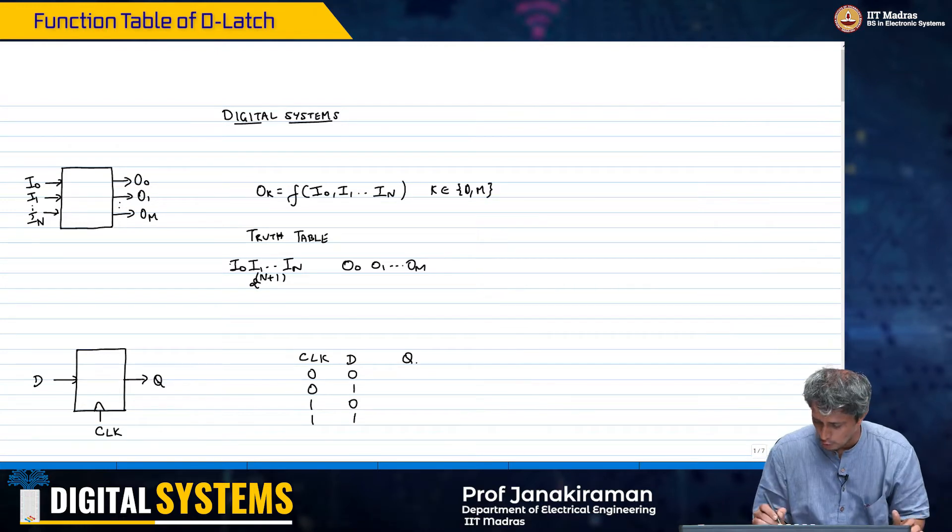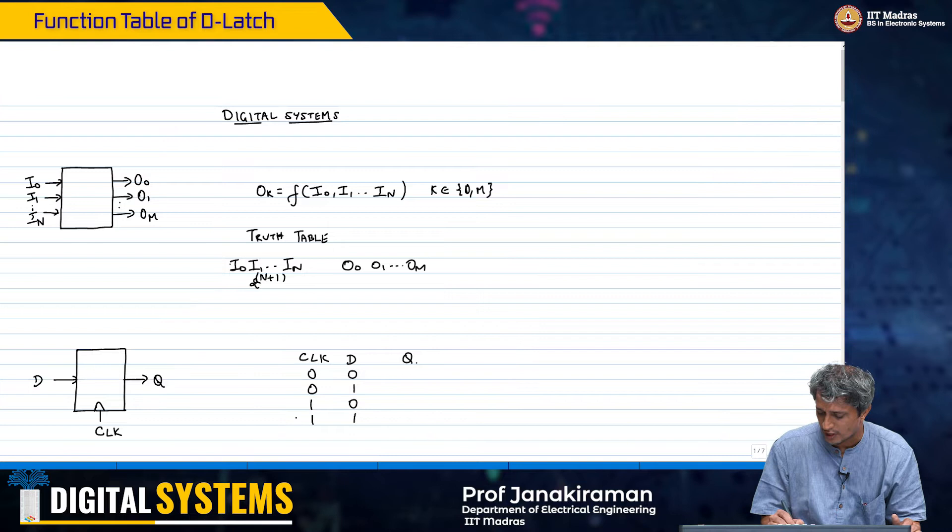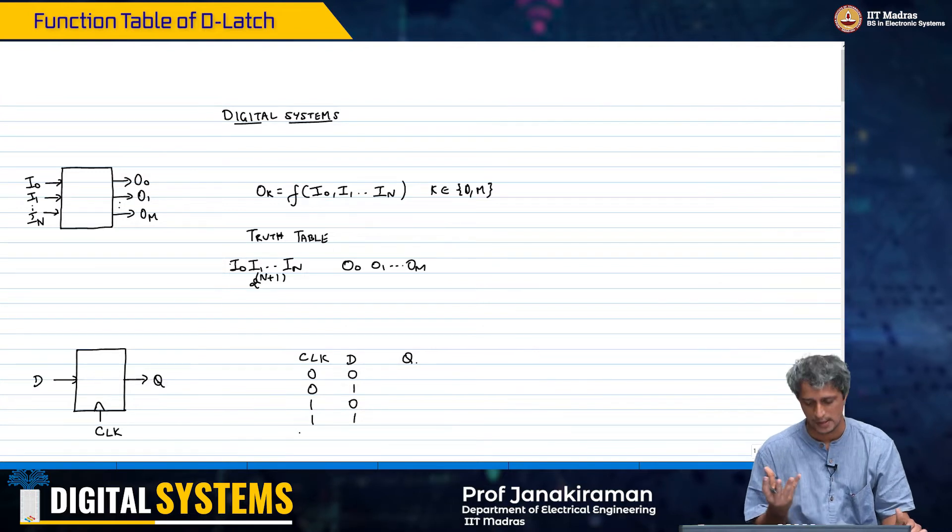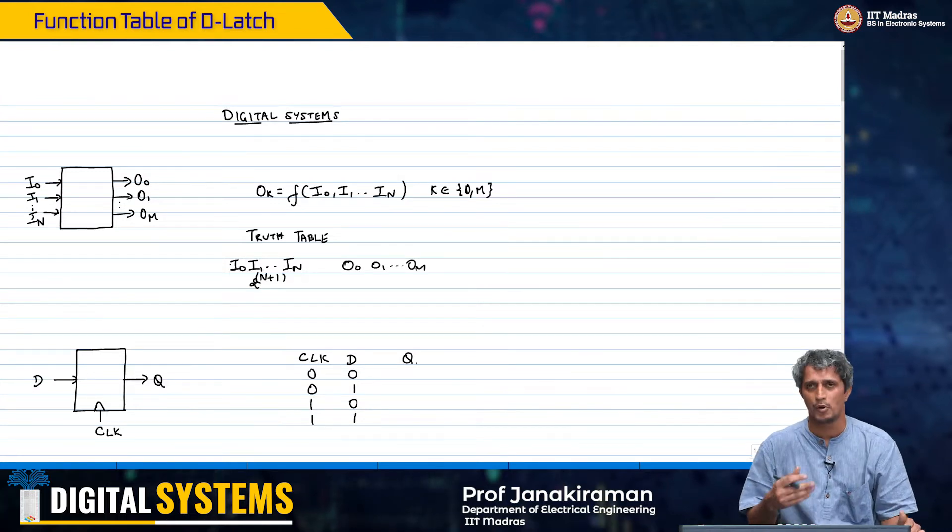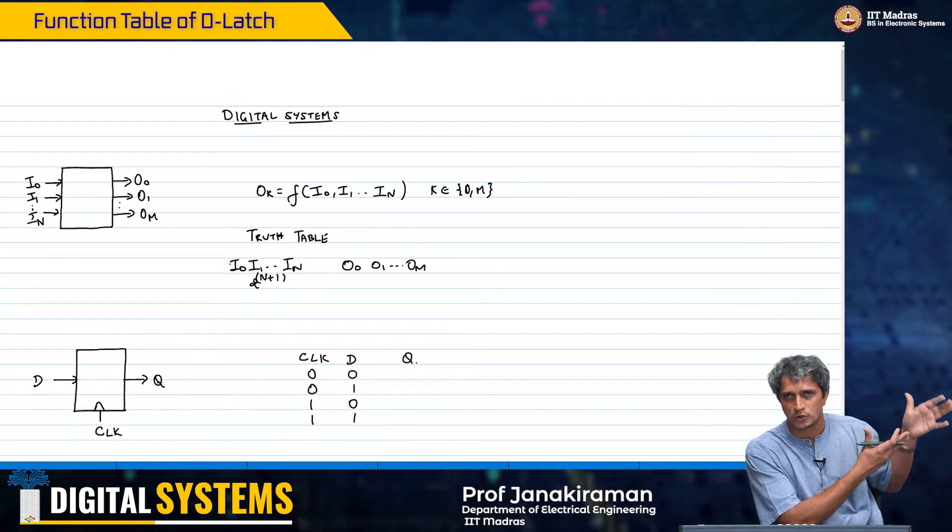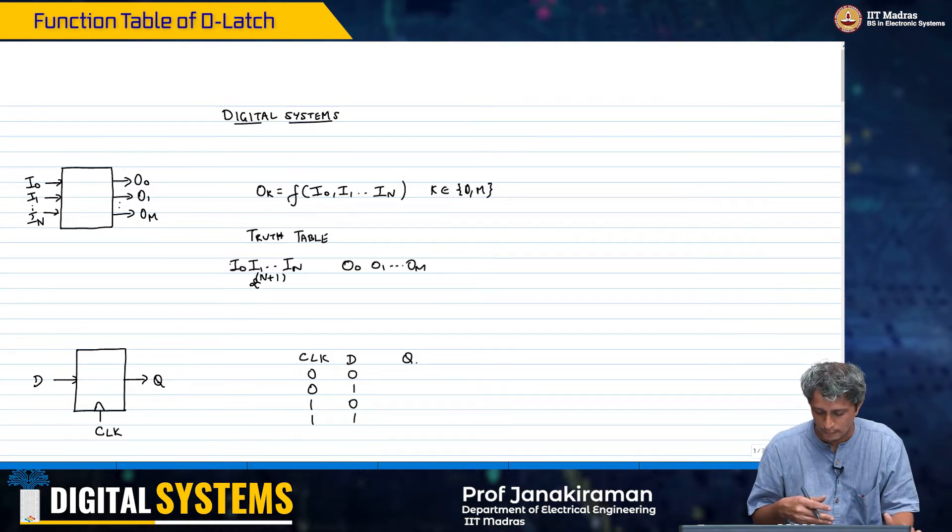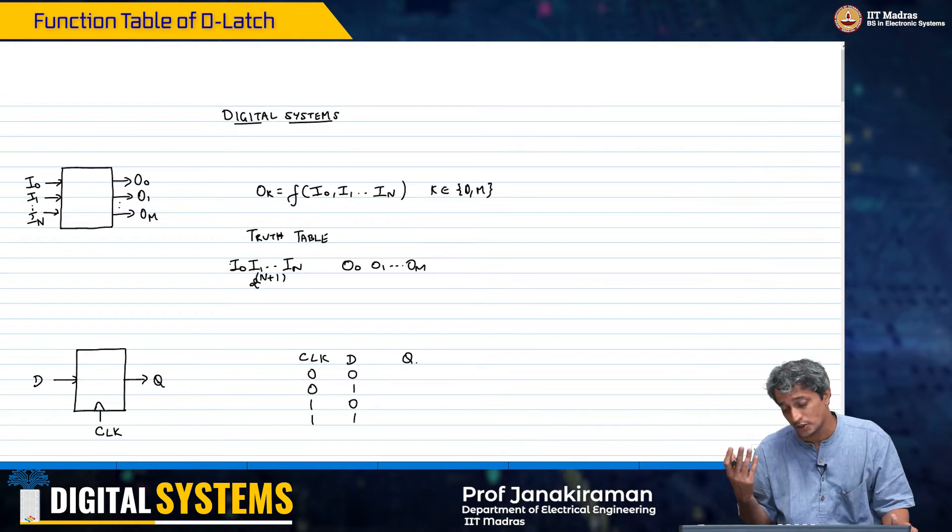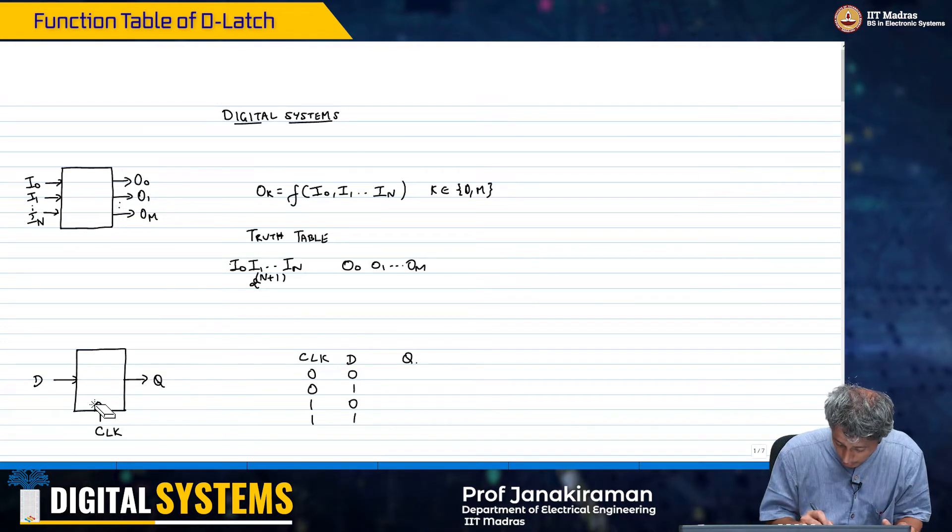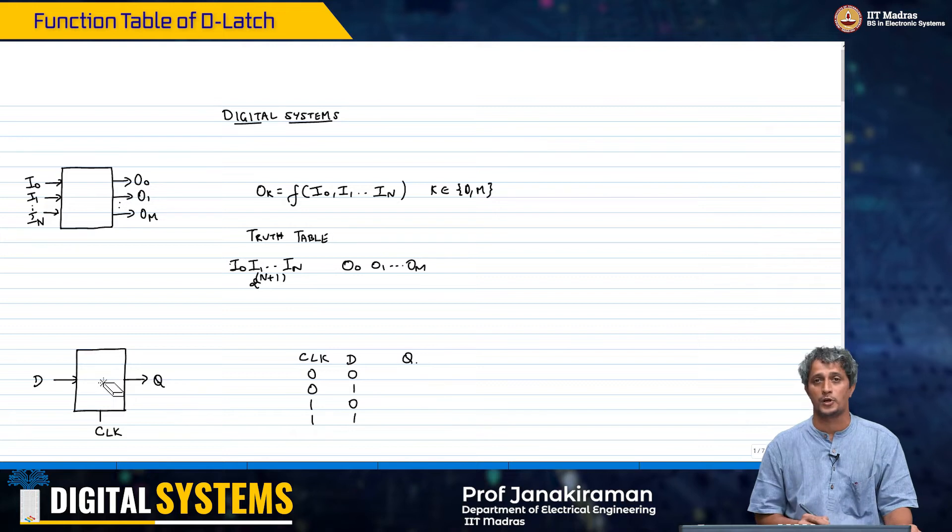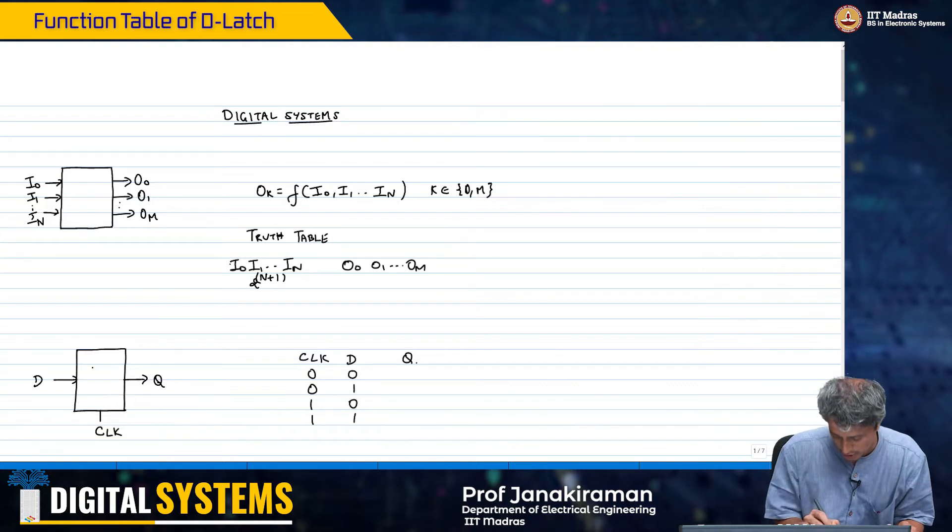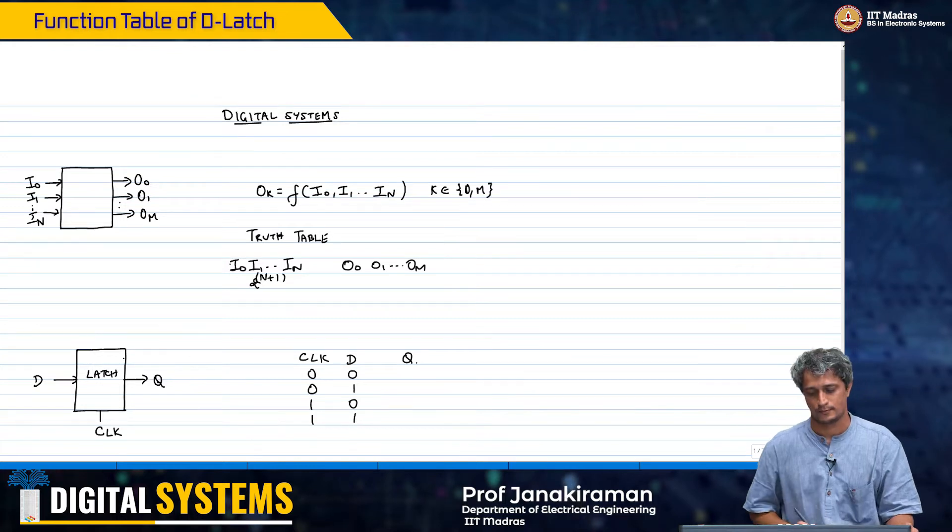Now, when you look at the case when the clock is equal to 1, remember the multiplexer was going to just allow D to go through. I'm not even talking about a flip-flop here, by the way, I am talking about a latch, a D latch.